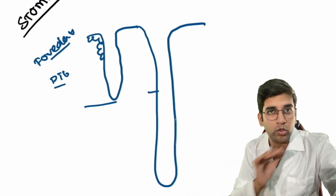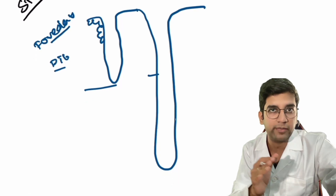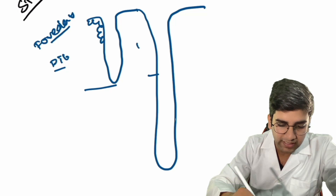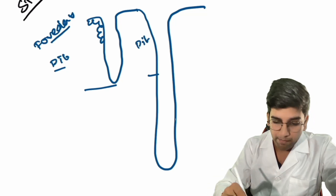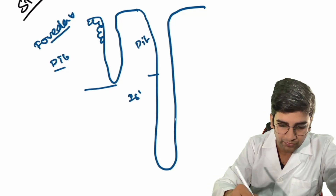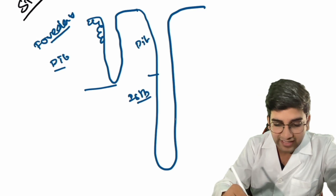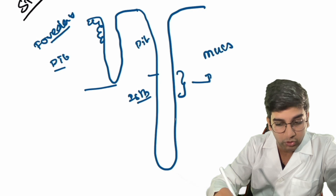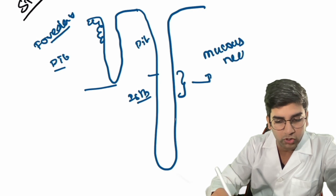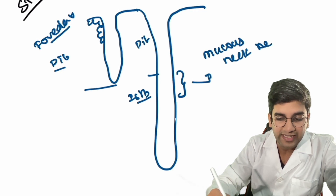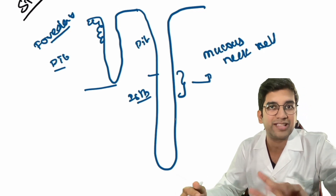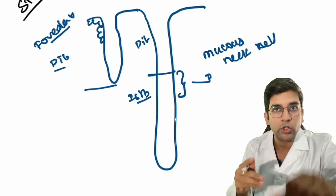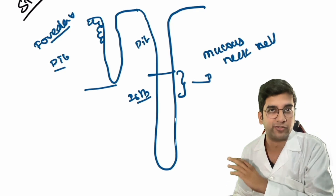Apart from the pit, the layer below the pit is called the isthmus — also referred to as the neck part. The isthmus predominantly contains mucus neck cells. Again, these are mucus-secreting cells. The only difference is the naming: the surface is called foveolar epithelium, while these are called mucus neck cells.